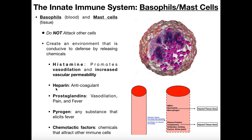Heparin is also released by basophils and mast cells. Heparin is an anticoagulant. Initially, you don't want coagulation where there's an infection, because if the blood were to coagulate it would block things from getting to the infected area. So heparin prevents the blood from clotting and allows effective movement of things to and through the injured area.